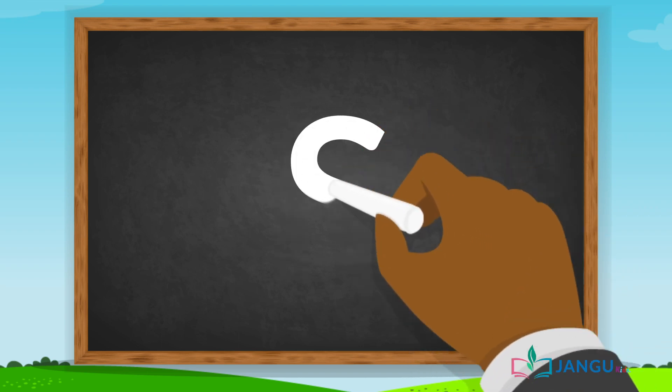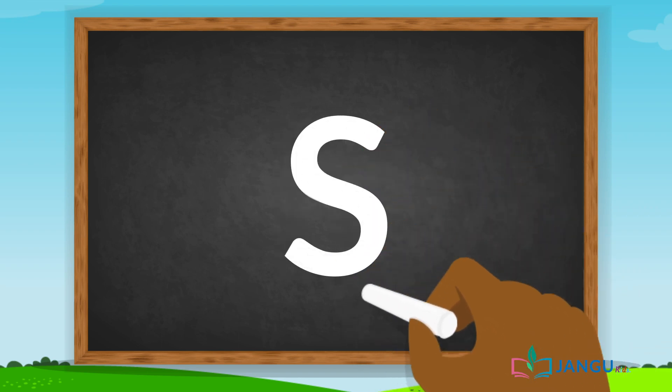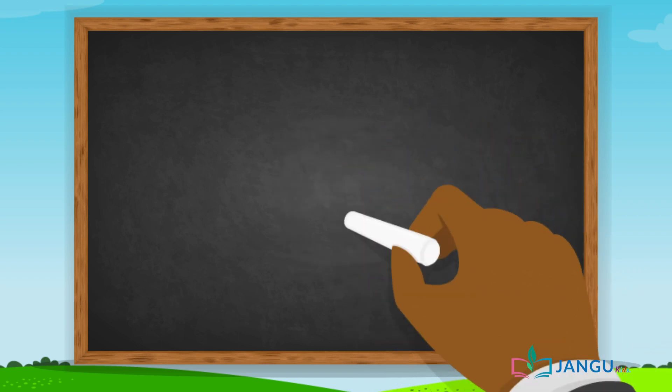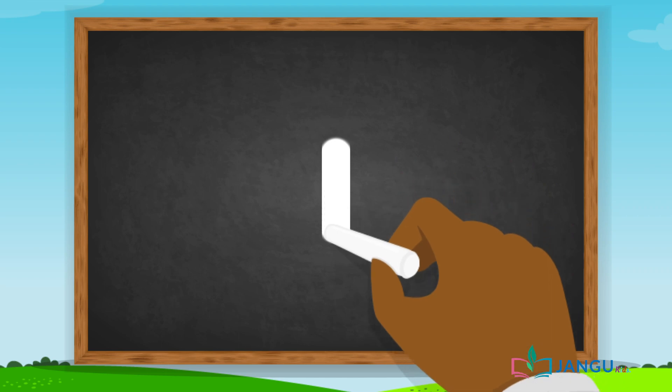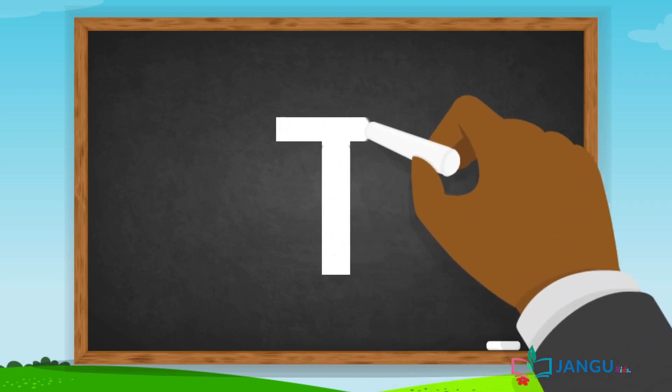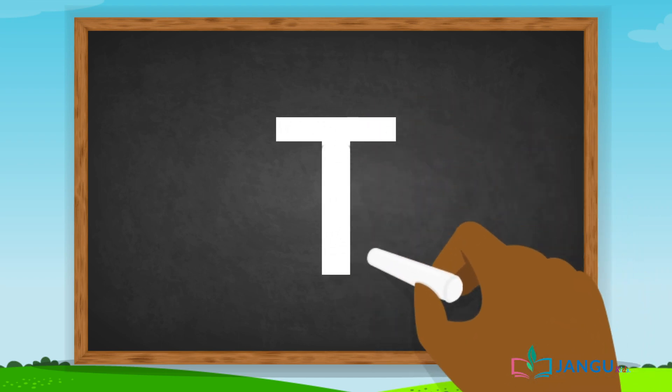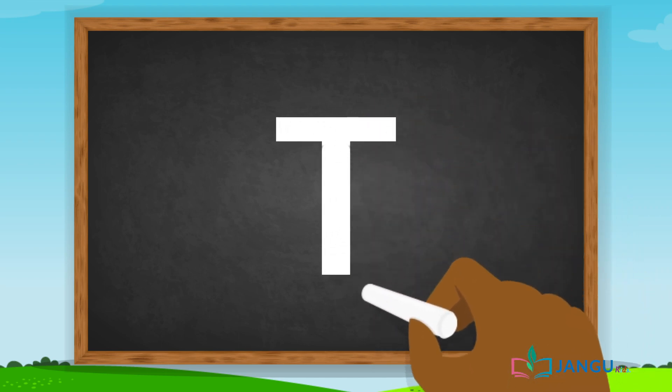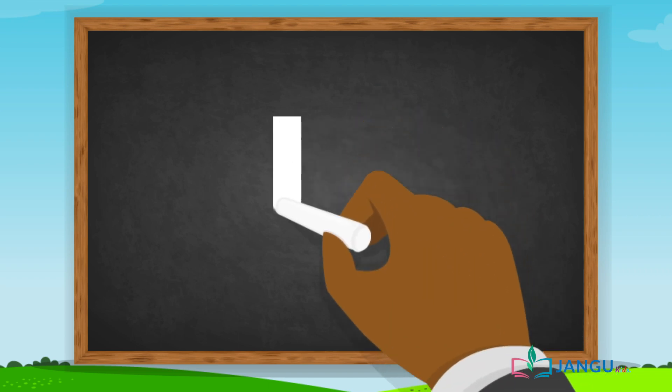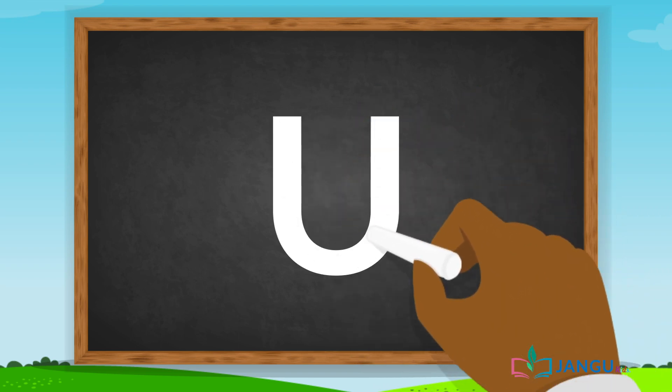S looks like a snake. T is a long straight line with a short line on top of it. U is a curved line.